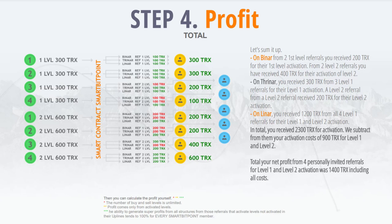Now let's see what happens when referrals 1, 2, 3, and 4 buy level 2. Referral number 1 paid 600 TRX for level 2 activation. In binary, you get nothing — your first-level upline gets 200 TRX. In trinary, you get nothing — your first-level upline gets 200 TRX. In Lina, you get 200 TRX. In total, you get 200 TRX. Total income: 1100 TRX.